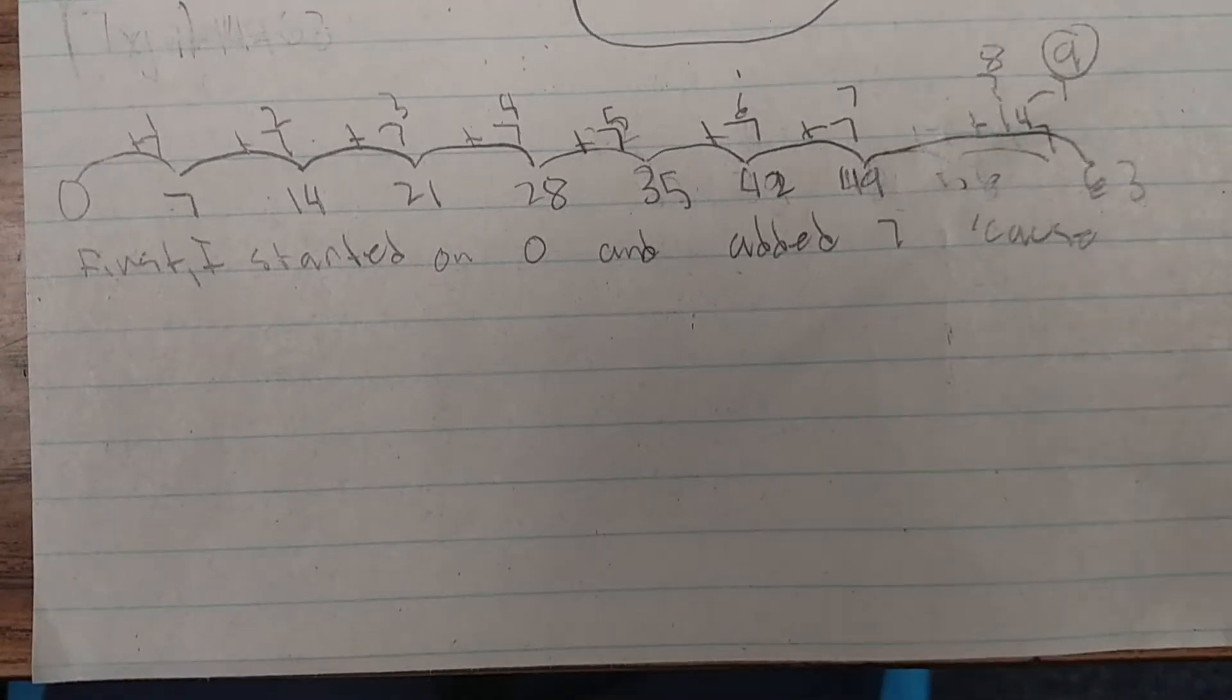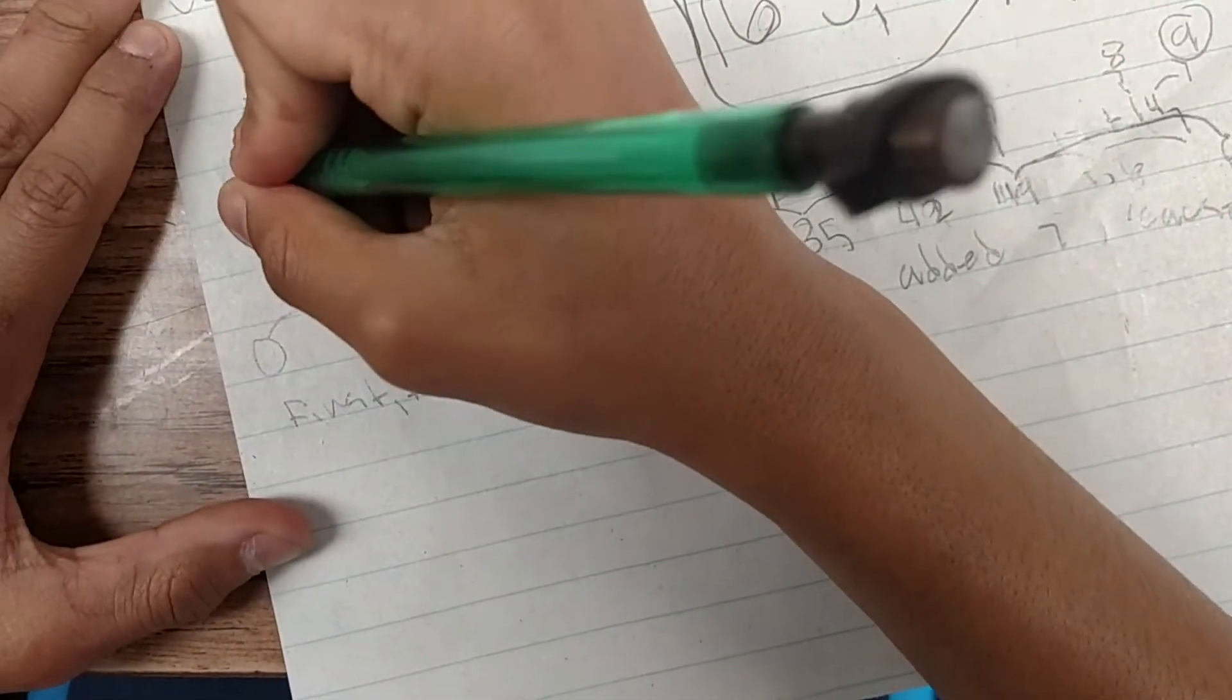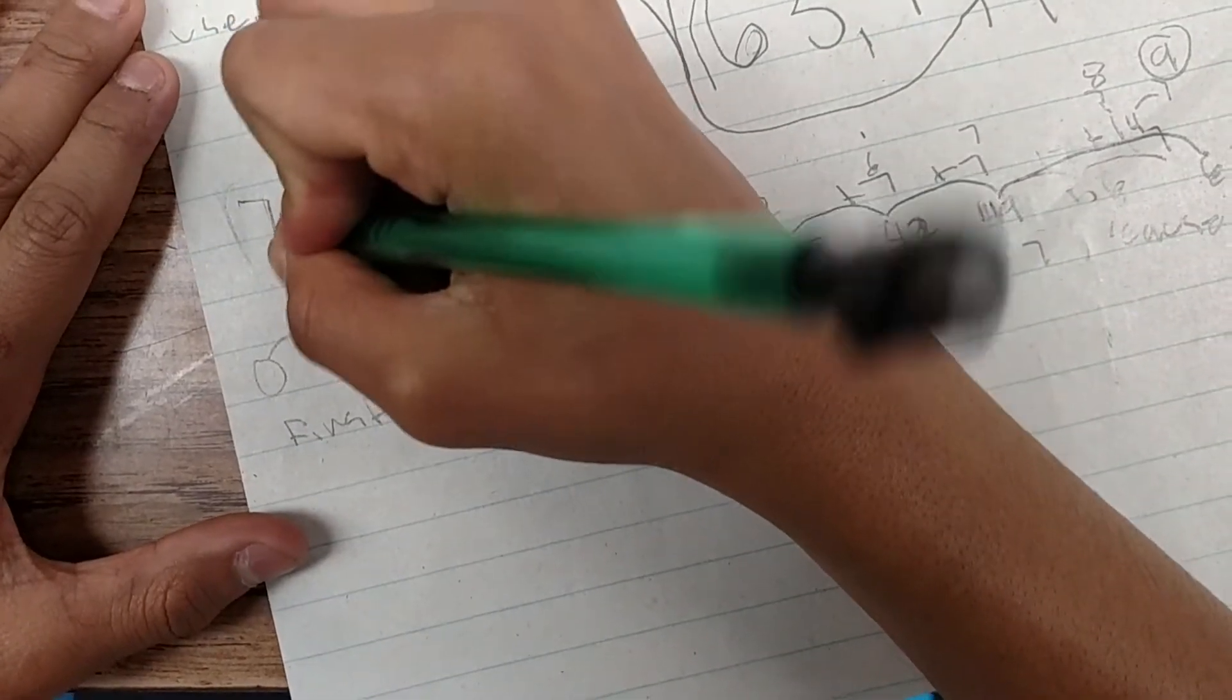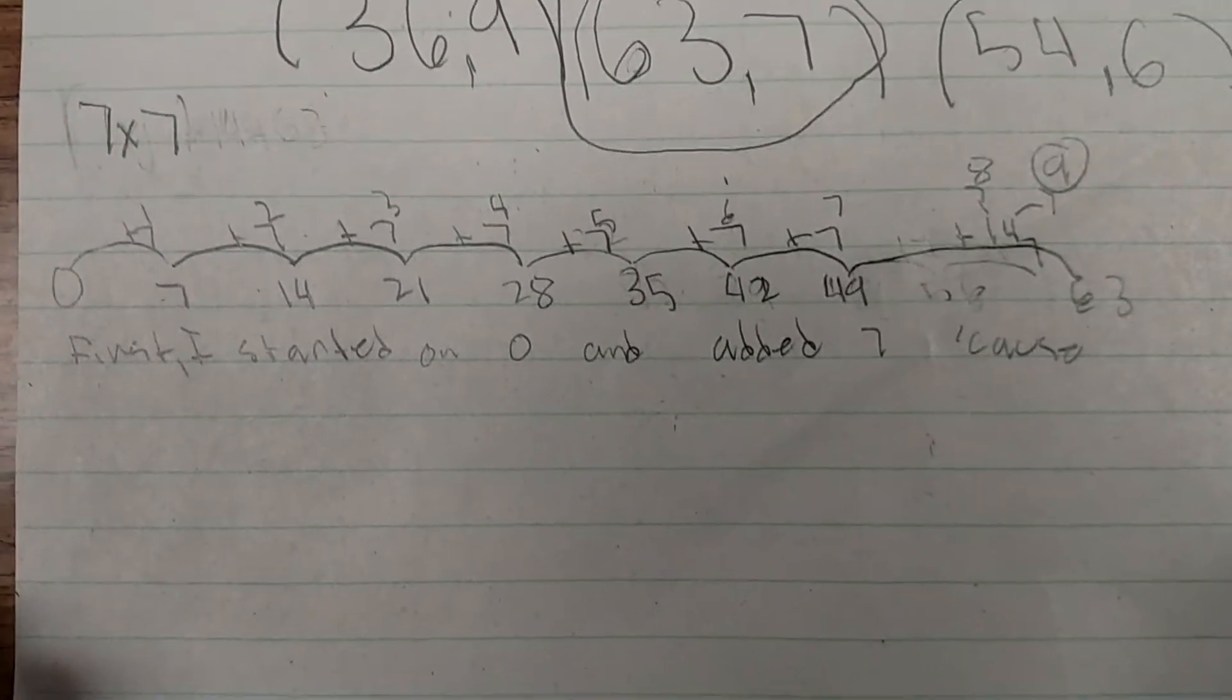Okay. So what did you do first? Well, first I made 7 groups of 7. So can you write that? 7. And do you know the symbol for groups of? Good. 7 groups of 7. So stop right there.